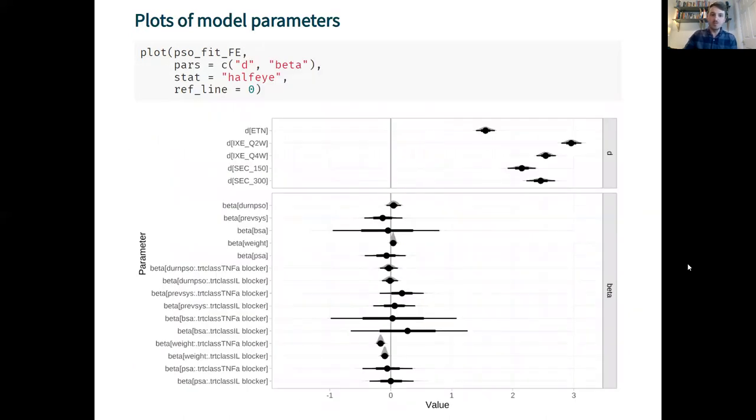We can plot model parameters just using the plot method again and here it's using the power of ggdist so I can specify a half-eye stat for example or other plot stats and it will change the look of the plots that are generated, giving me densities as well as points.